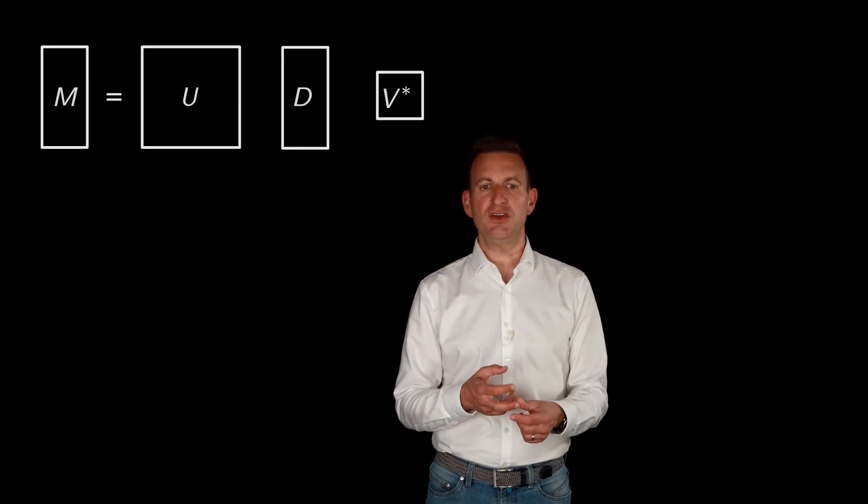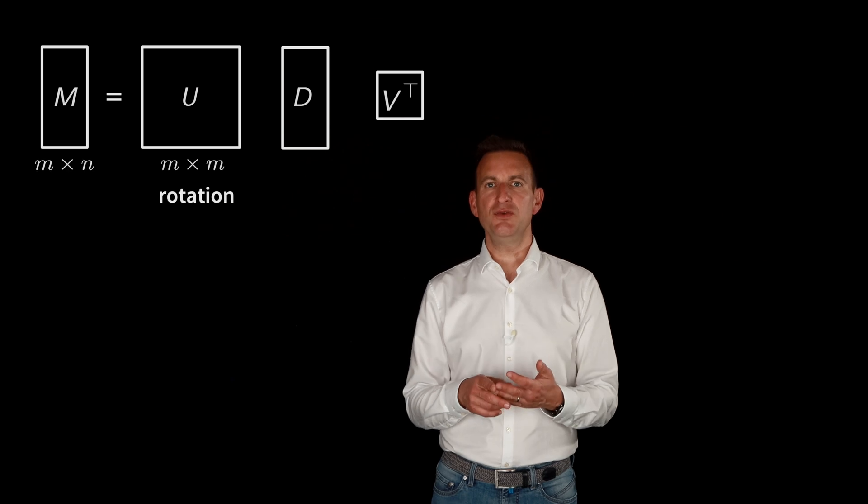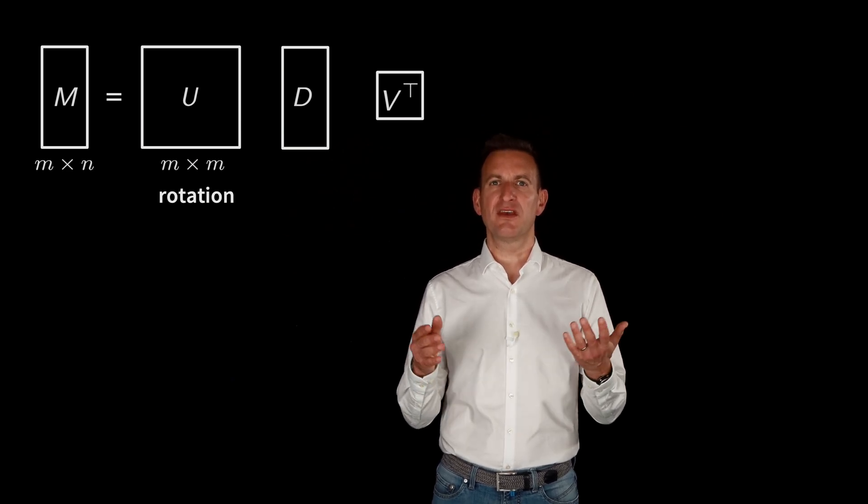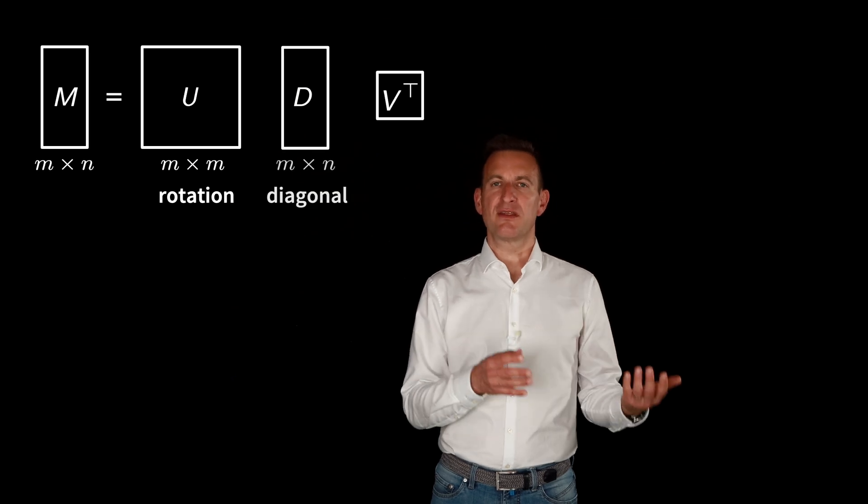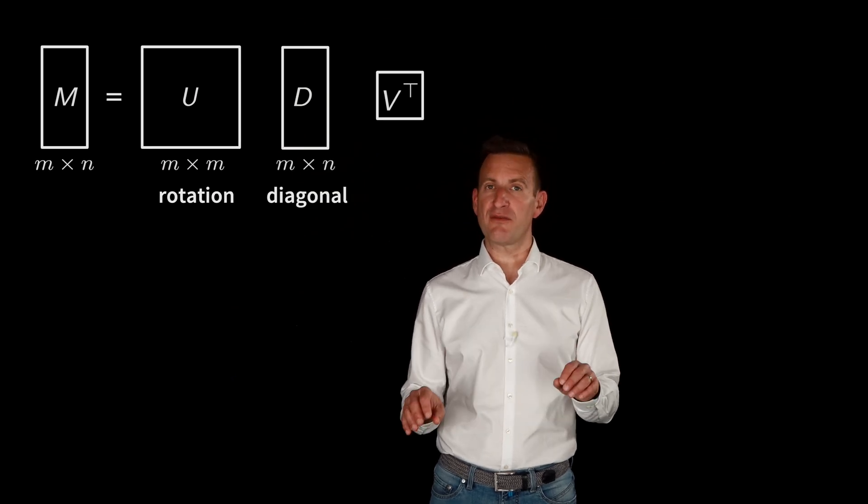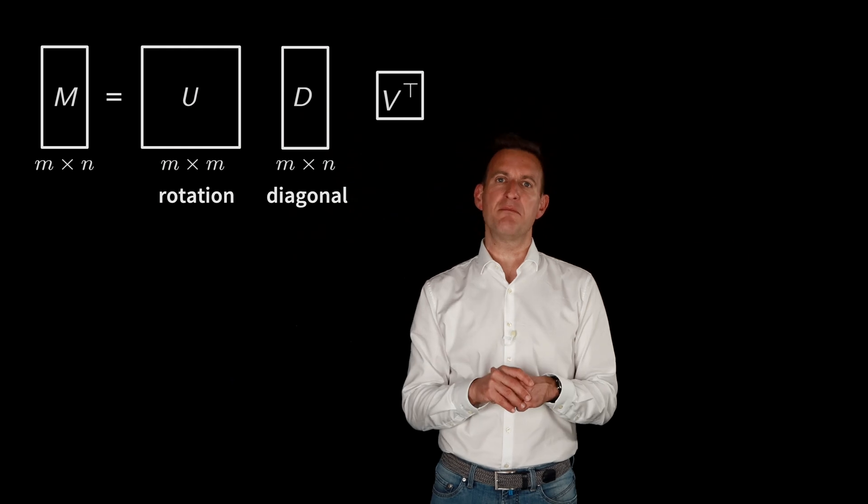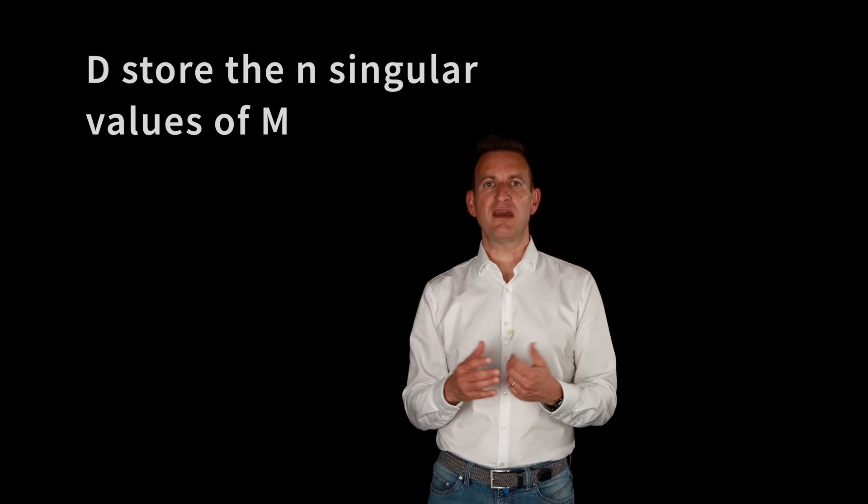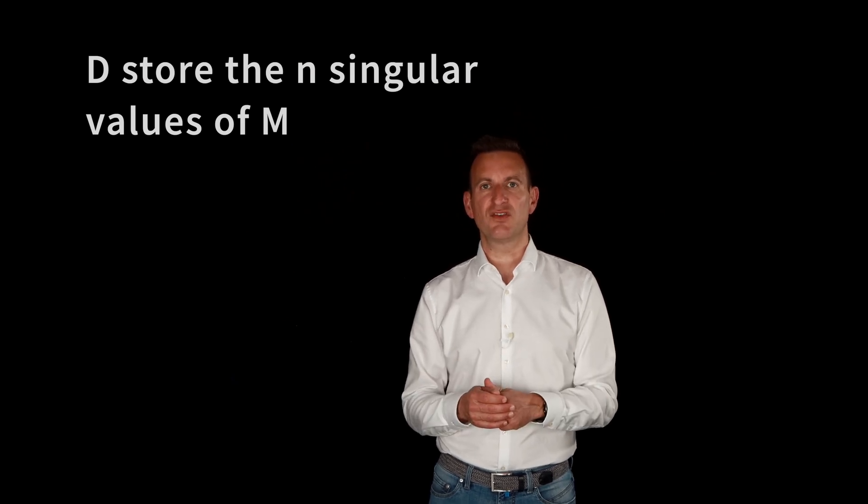And the SVD generates basically three matrices U, D, and V. U is an M by M matrix, and if you're in the real space, it is a rotation matrix. The matrix D is a matrix which is zero everywhere except on the first N main diagonal entries. It's an M by N matrix, and these are exactly the up to N singular values that we get out of here.